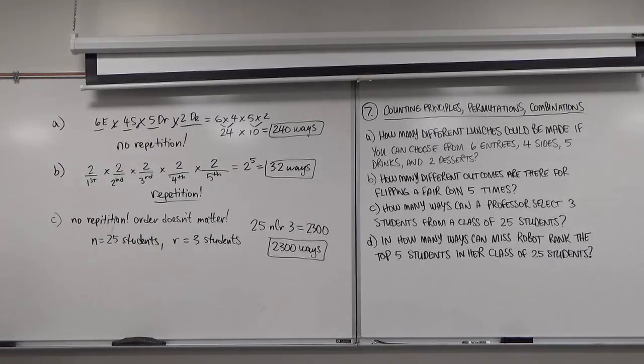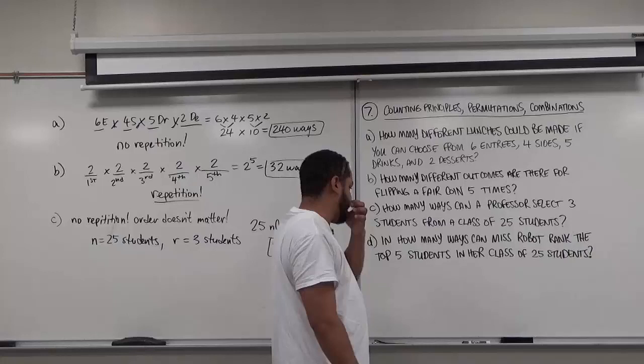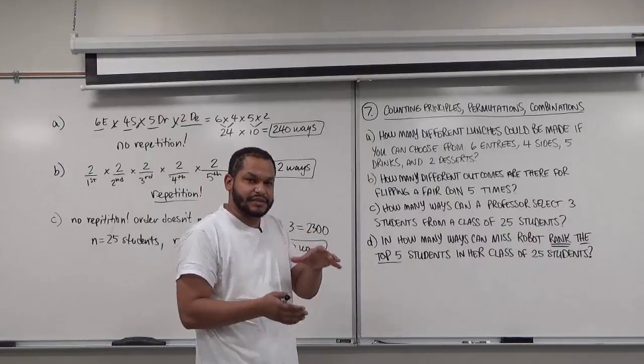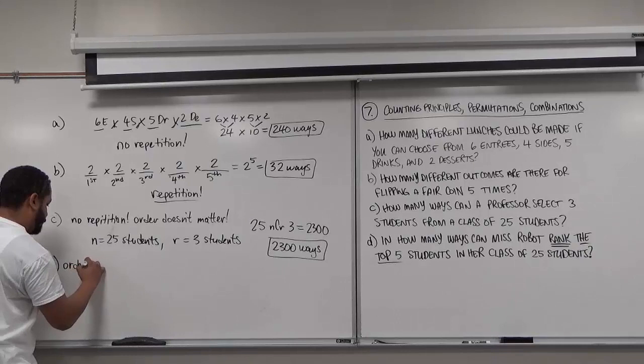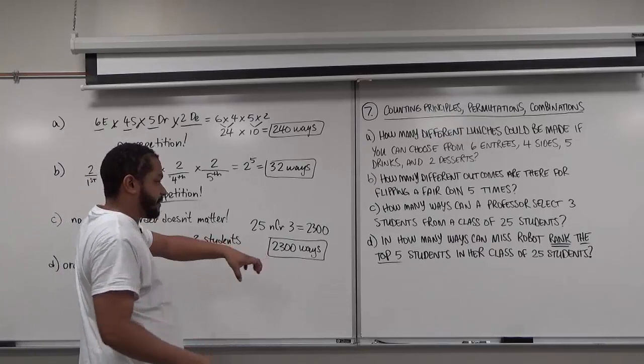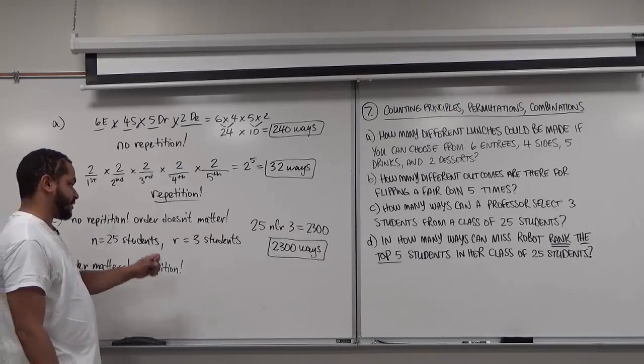Moving on to Part D: in how many ways can Ms. Robot rank the top 5 students in her class of 25 students? Because there is a rank system — a system of hierarchy — we know order does matter. Besides order mattering, there's going to be no repetition because you can't select a student more than once and place them in a position. So being that we have order mattering and no repetition, we know this is a permutation case.